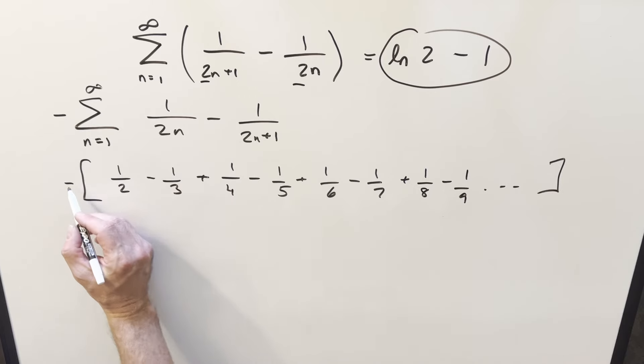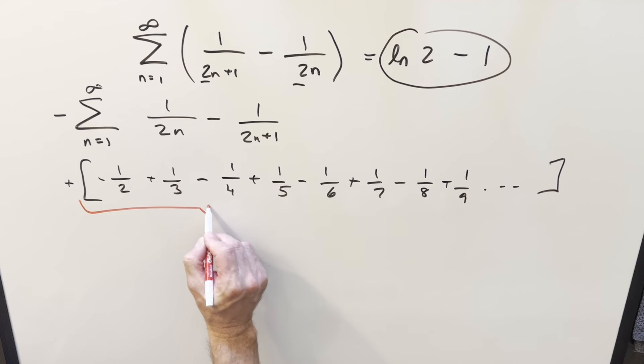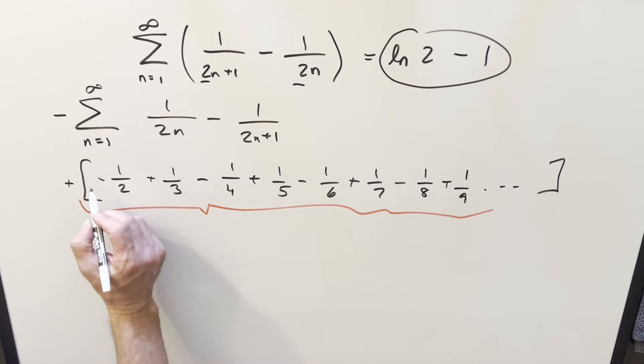Well now if you just take this minus sign and distribute it in, you're going to change the sign on everything, right? So let's do that really quick. But the thing to notice now is what we have right here. This is almost the alternating harmonic series. It's just 1 over n with alternating signs. All I need to do to make this work is let's just add in a 1 right here. So I don't change it. I'm just going to subtract off a 1 in the end.